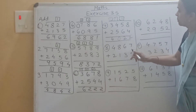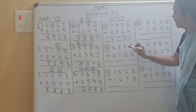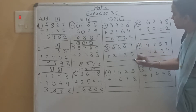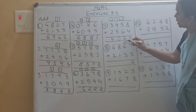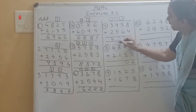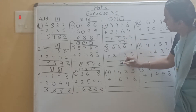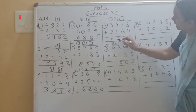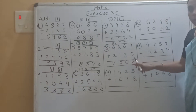Now the eighth example is 4867 plus 2135. So 7 plus 5 is 12. Write down 2, carry 1. Then 6 plus 1 is 7, 7 plus 3 is 10, carry 1. Write down 0, carry 1. Then 8 plus 1 is 9, 9 plus 1 is 10, carry 1. Write down 0, carry 1. Then 4 plus 1 is 5, 5 plus 2 is 7. So the answer is 7002.